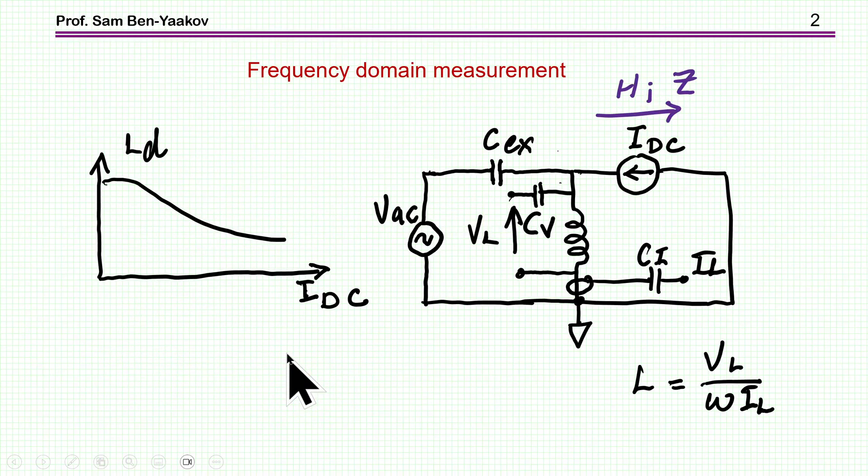Practical inductors are sensitive to DC current. As the current goes up, the inductance goes down. This is a typical plot of the differential inductance which you will find in data sheets of inductors.